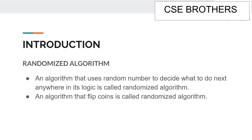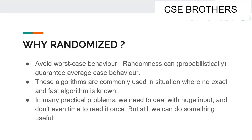This is how randomized algorithms reduce time and space complexity. Another simple example is an algorithm that flips a coin, which is also called a randomized algorithm. Randomized algorithms are necessary because they avoid worst-case behavior — many algorithms can give solutions with worst-case time complexity, but randomized algorithms guarantee average-case behavior.